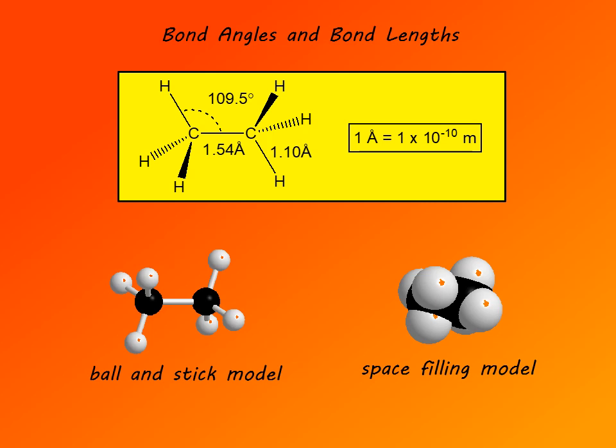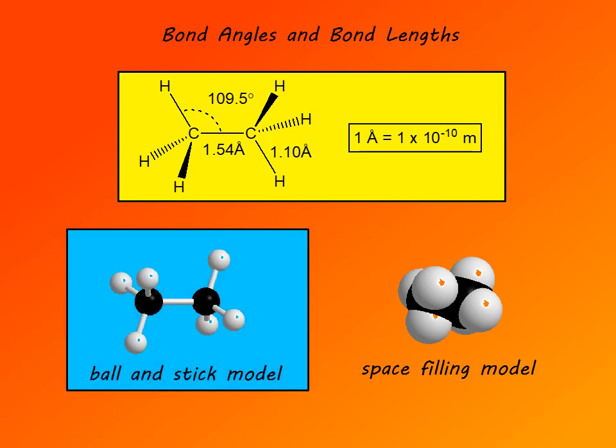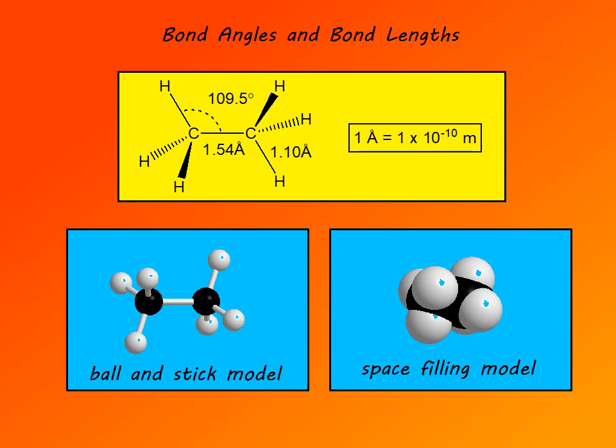The carbon–hydrogen bond length depends on the hybridization of carbon. In the case of sp3 hybridized carbon, the bond length is 1.10 angstroms. One angstrom is a unit of length equal to 1 × 10⁻¹⁰ meters. Here is the ball-and-stick model of ethane. From this model you can see that bond angles are ideal tetrahedral angles, and that the carbon–carbon single bond is noticeably longer than the carbon–hydrogen single bond.